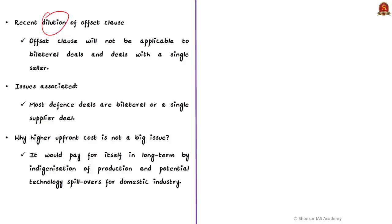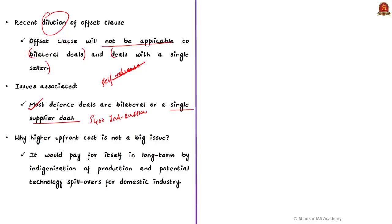After this dilution, the offset clause will not be applicable to bilateral deals and deals with a single seller. This policy dilution is further going to affect India's R&D in the defense sector as well as India's goal of self-reliant India, because most defense deals are bilateral or single-supplier deals. For example, we bought the S-400 which is a bilateral deal, and we are buying Chinook, also a bilateral deal. So most future deals will not have any offset clause, which will be disastrous for defense production and technological self-reliance.